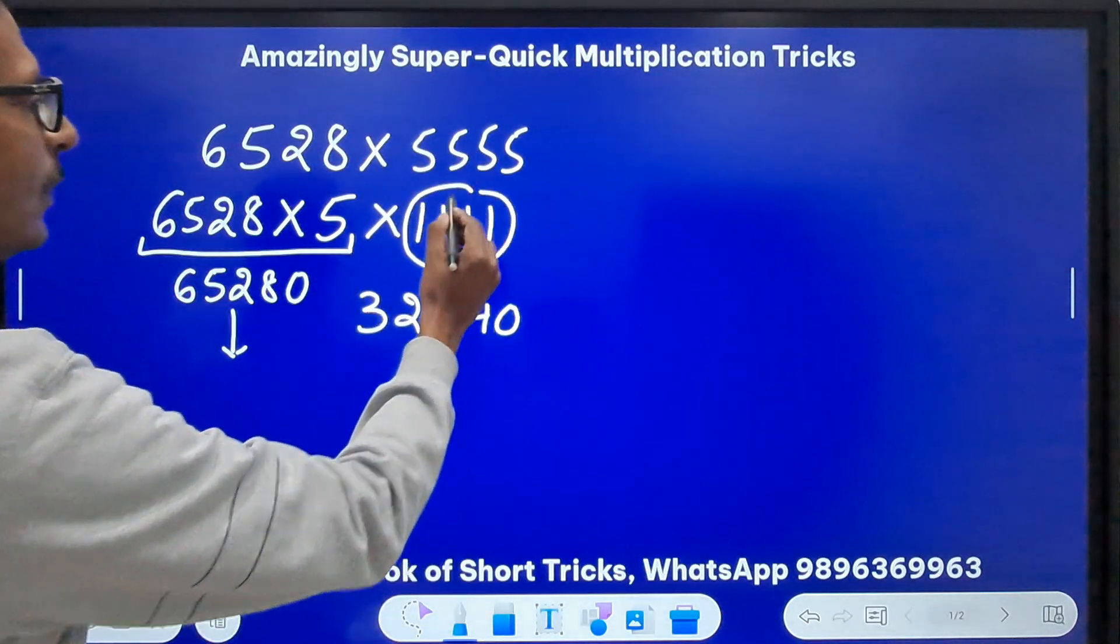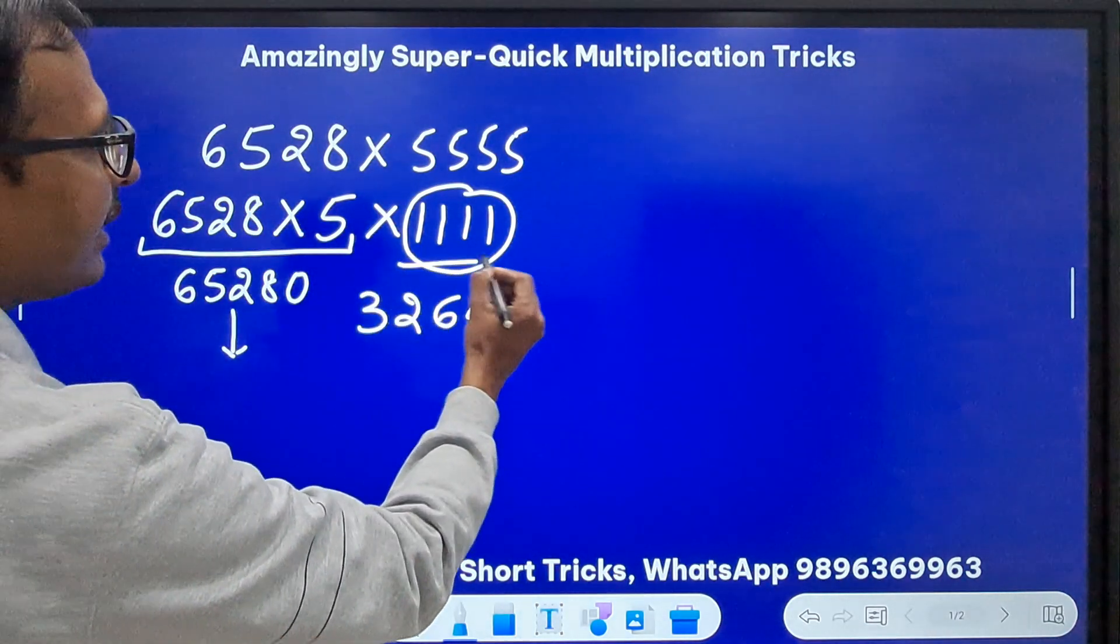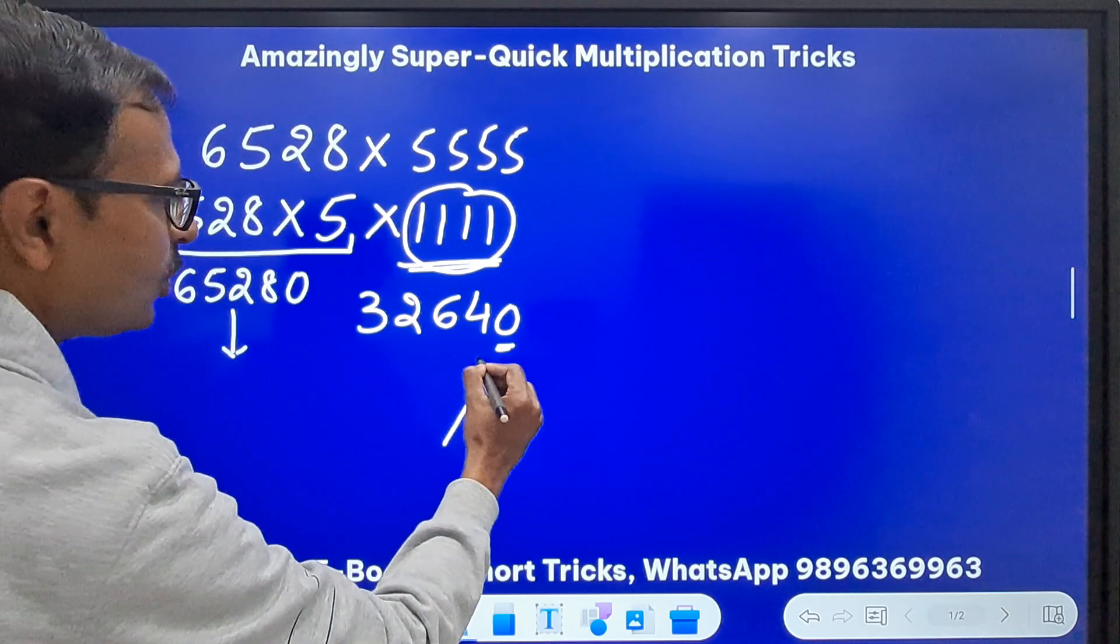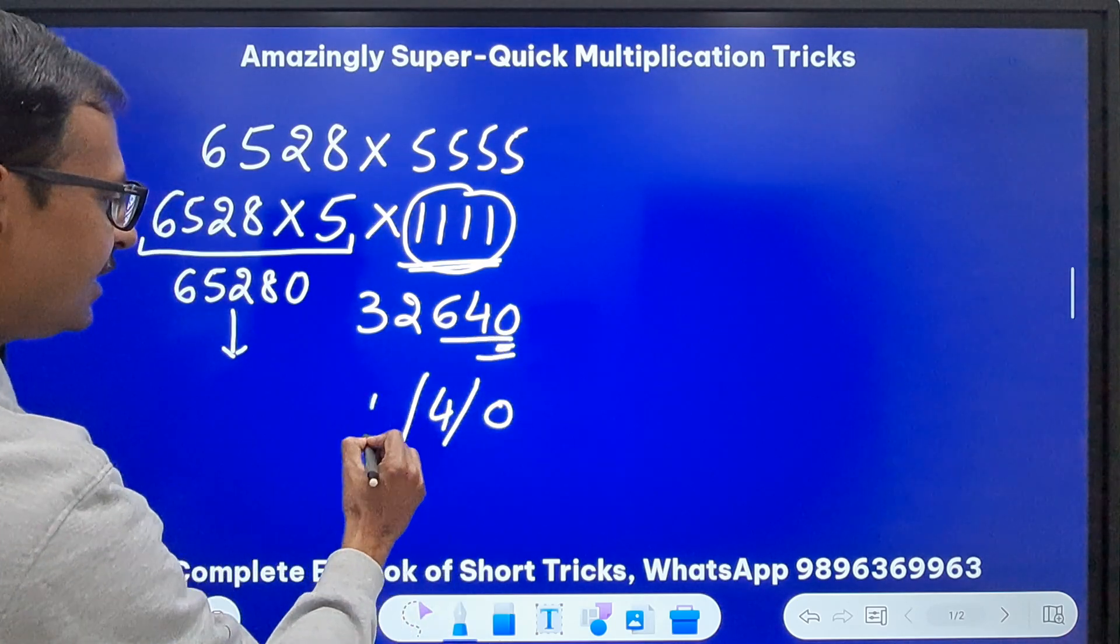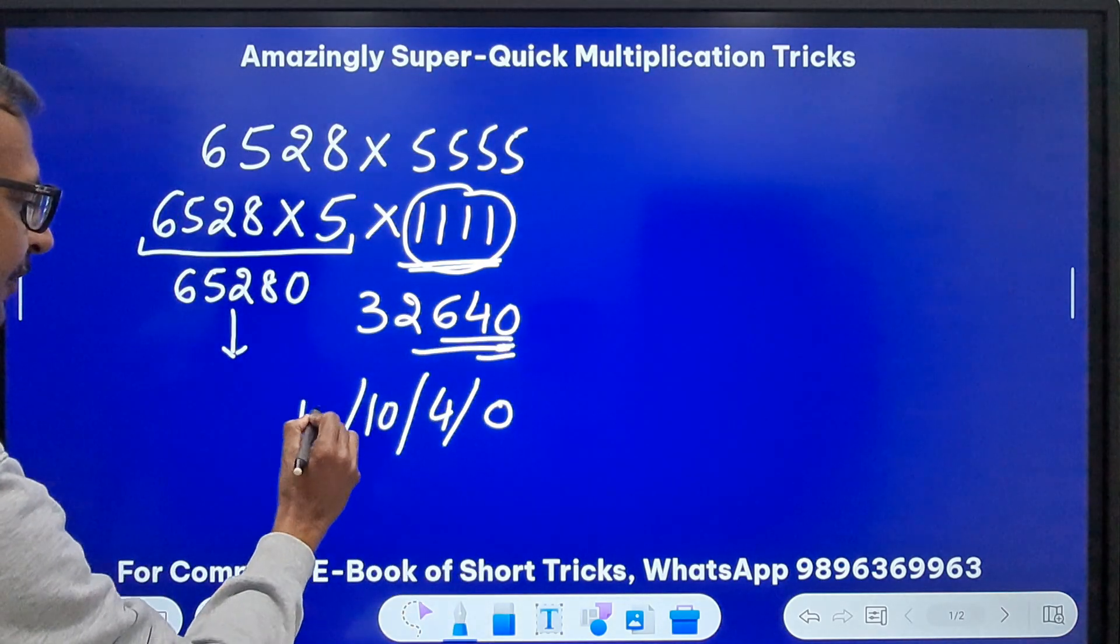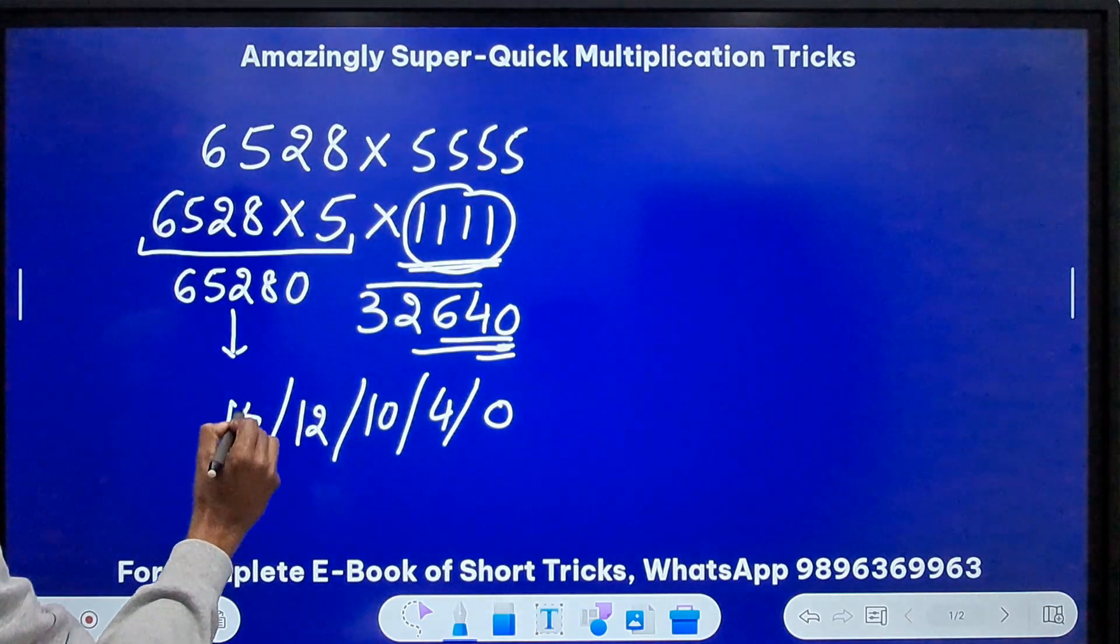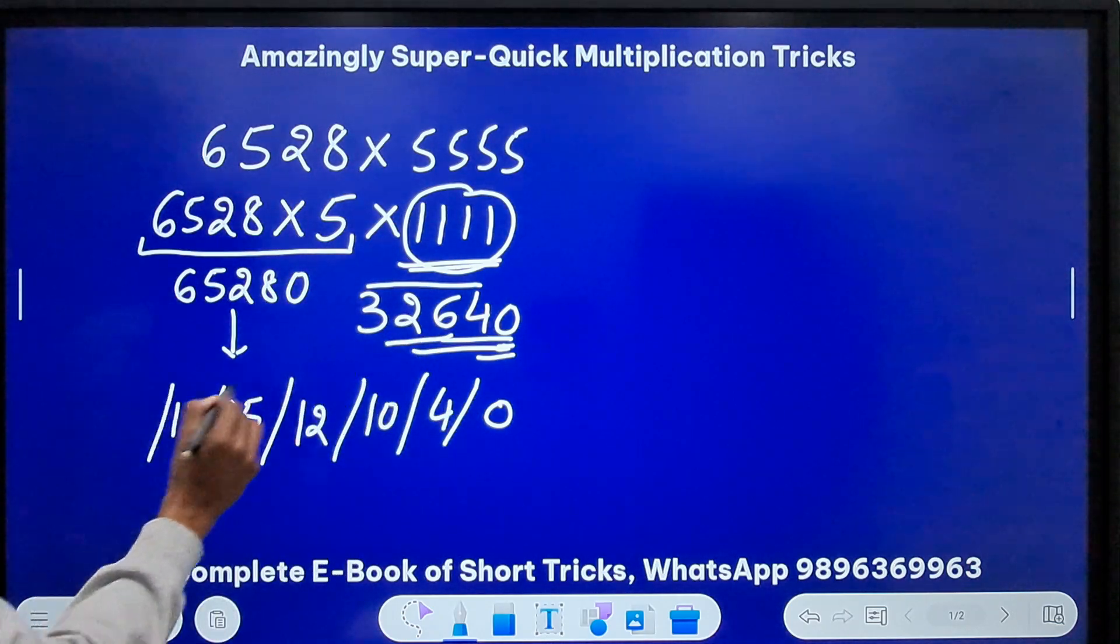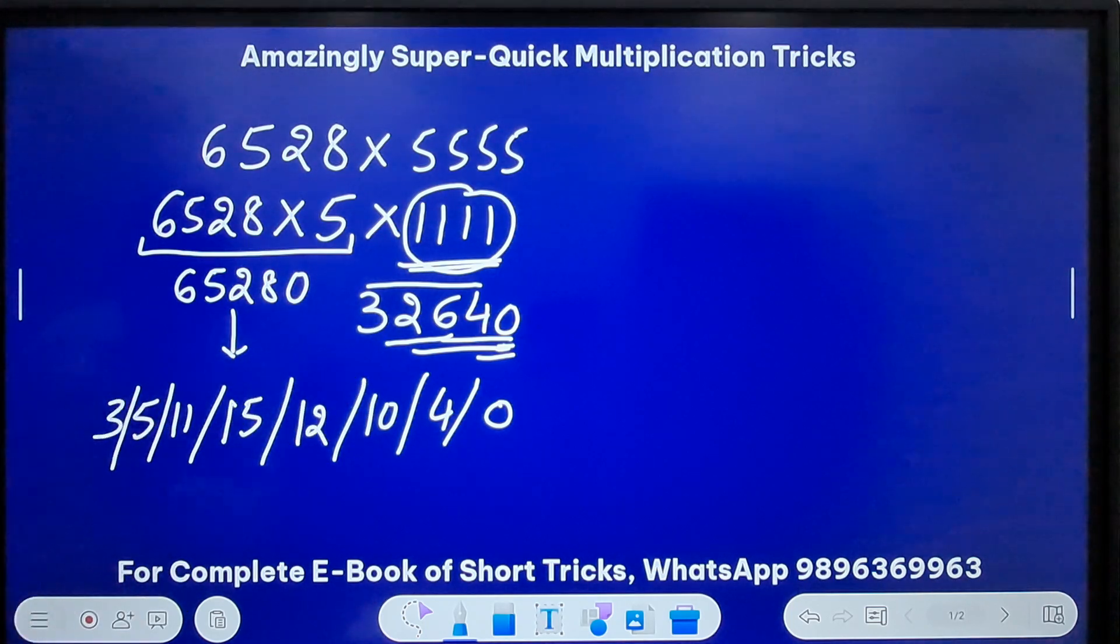Now I need to multiply this by 1111 to get my answer. For multiplying by repeated ones, start from this zero, then zero plus four is four. Then take three digits, this is 10. And then take four digits, this is 12. Then start with four and take four digits, this is 15. Then first three digits, which is eight plus three equals eleven. First two digits is five, and finally the first digit is three.